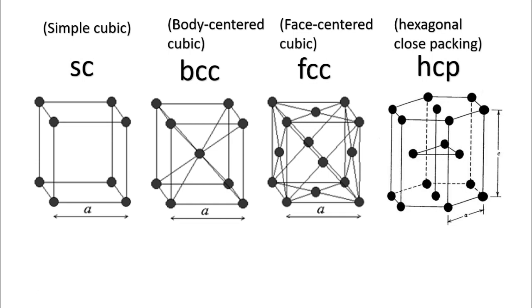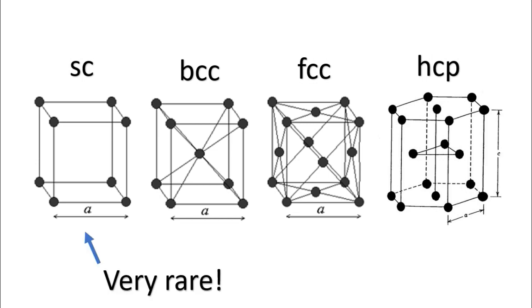Your physics course about crystal structure most likely starts with simple cubic lattice, and you may have the feeling that simple cubic lattice is probably the most fundamental and common crystal structure. However, it is actually the rarest one—there is only one material in nature that shows simple cubic structure.